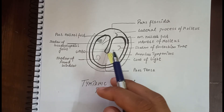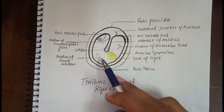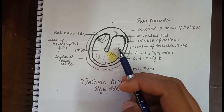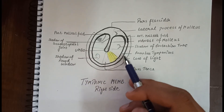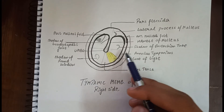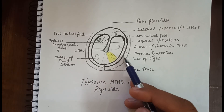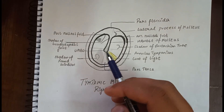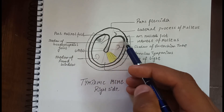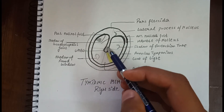A new diagram was made to explain the different landmarks of the tympanic membrane of the right side. The lower part is the pars tensa and the upper part is the pars flaccida. The outermost part of the pars tensa is thickened into a fibrocartilaginous ring called the annulus tympanicus, which is attached to the bony sulcus present in the periphery. The annulus tympanicus moves upward and forms two folds: the anterior malleolar fold and the posterior malleolar fold.